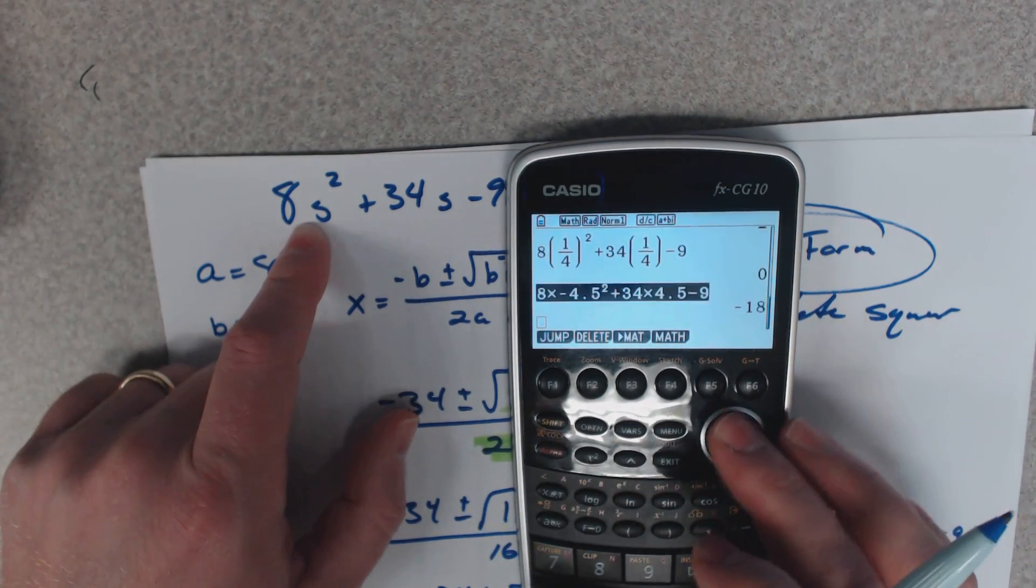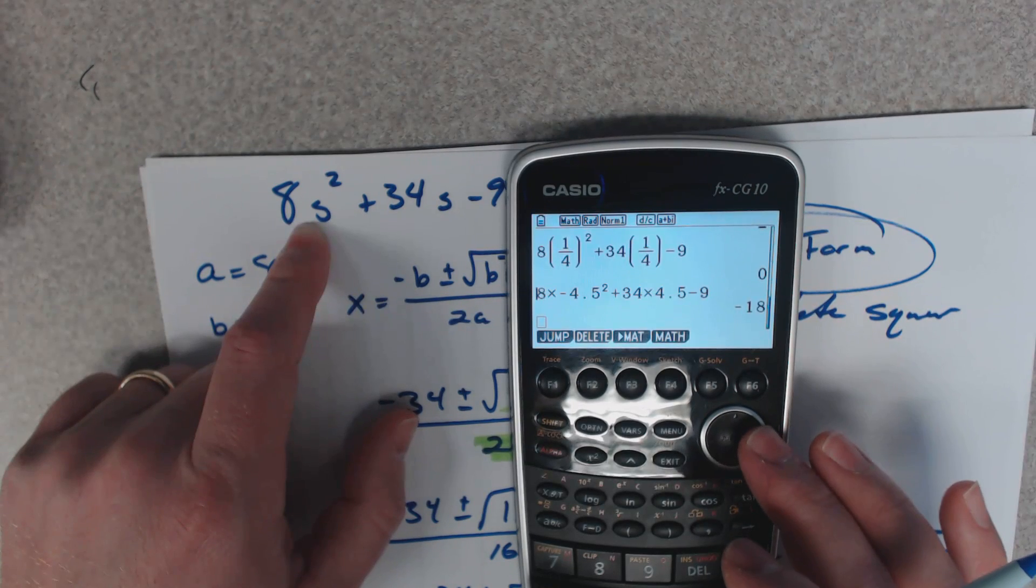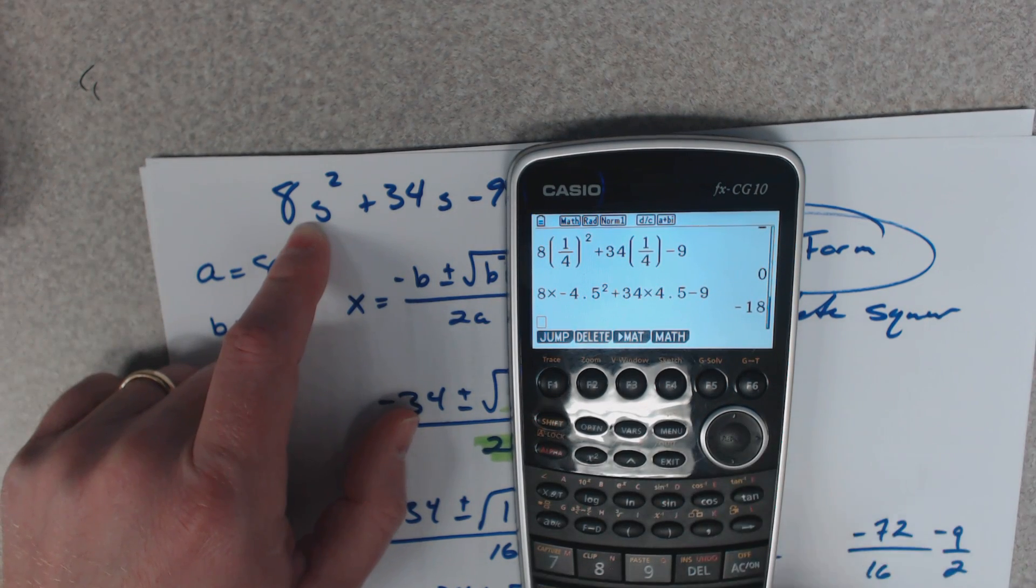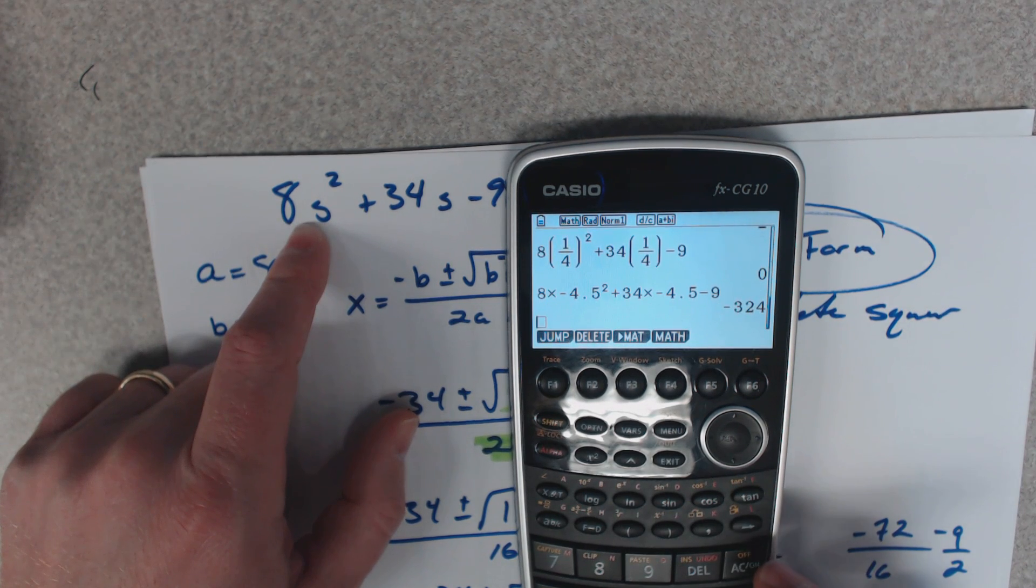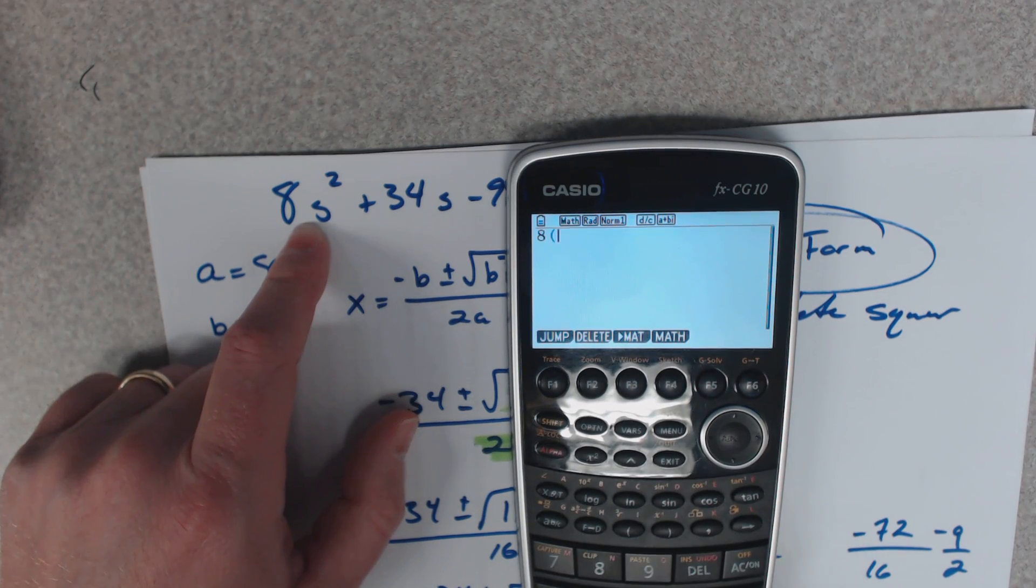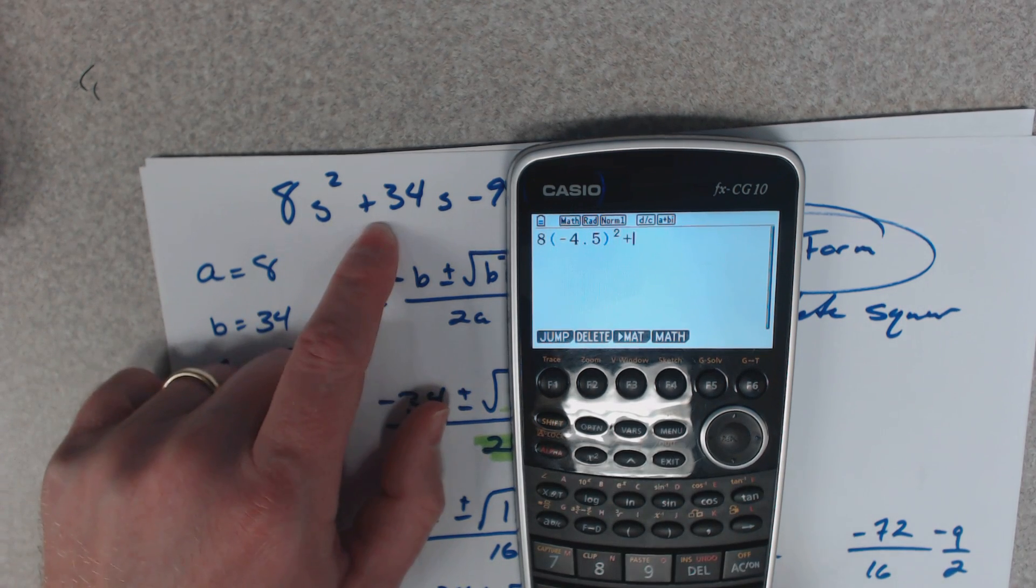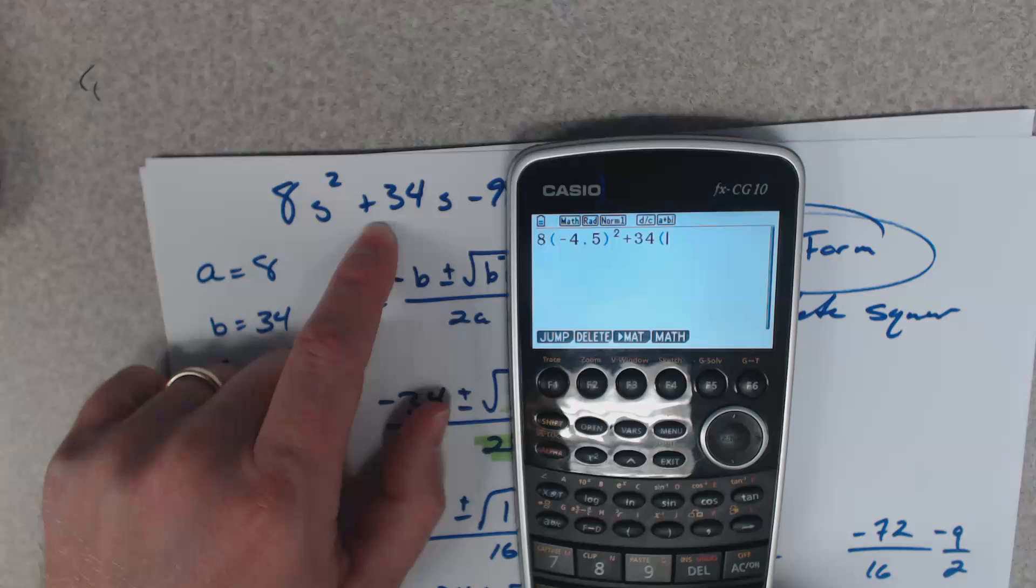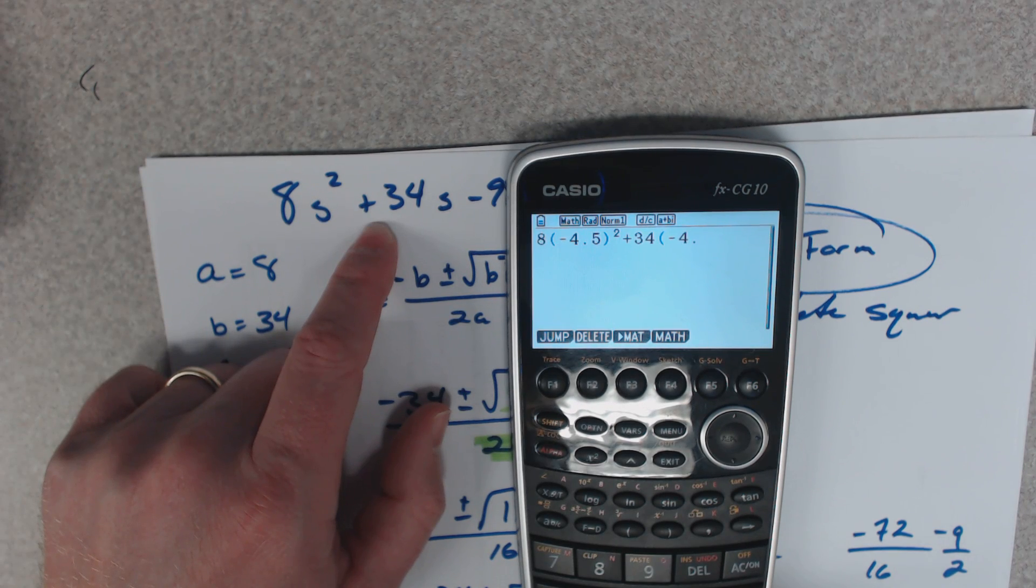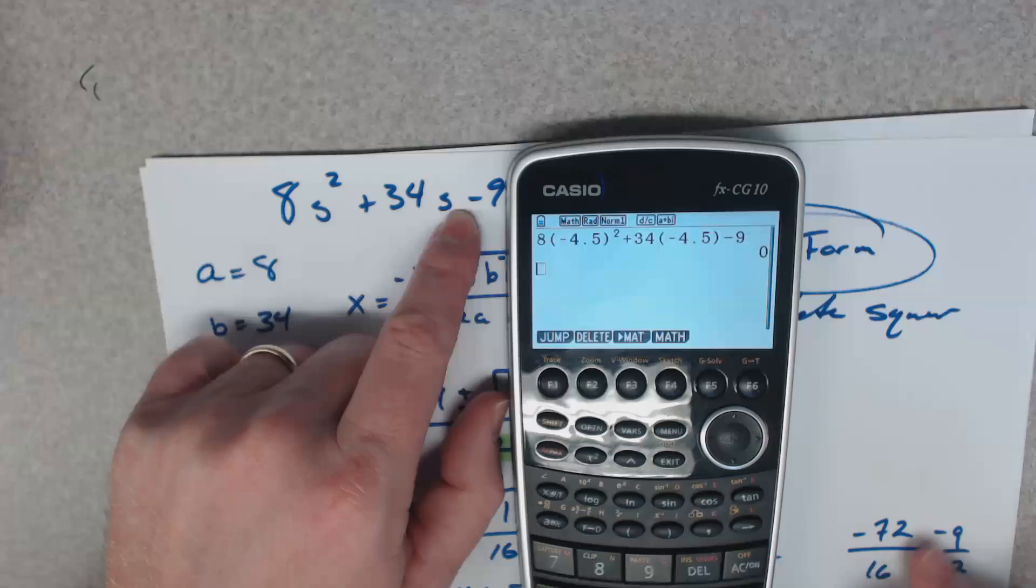The other value that should work here is a negative 4.5. Uh-oh, oh I forgot to put a negative in there. Shoot. Negative 4.5. Well, now I really screwed it up. 8 parentheses, negative 4.5 squared plus 34 times negative 4.5 minus 9, zero.